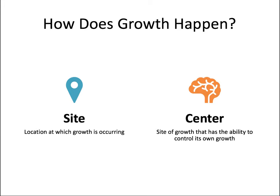Now let's talk about how growth actually happens. We have growth sites and growth centers. A site is any area where growth is occurring. A center is also a site of growth, but centers have the ability to grow independently on their own and can control the growth of other growth sites. As far as craniofacial structures go, the only true growth center is a synchondrosis. Sutures, surfaces, and the mandibular condyles are all sites.